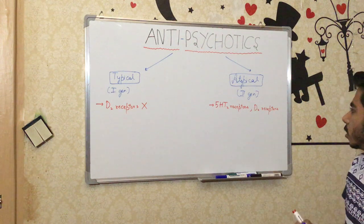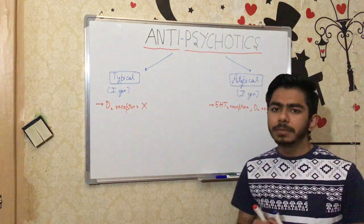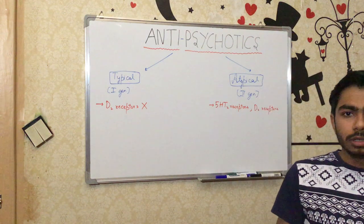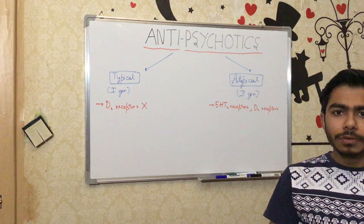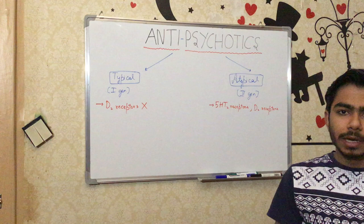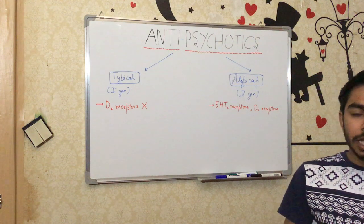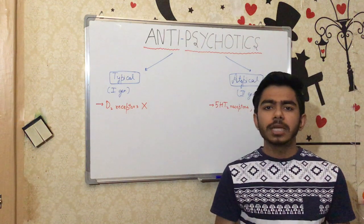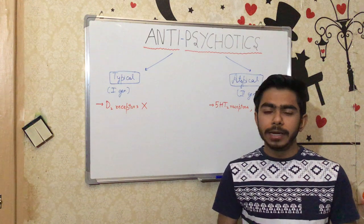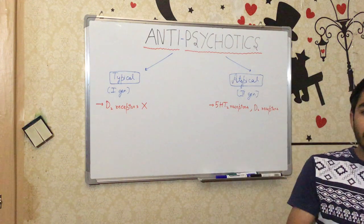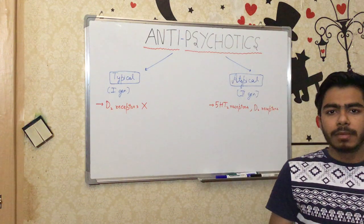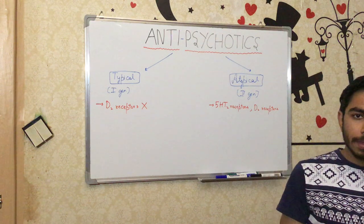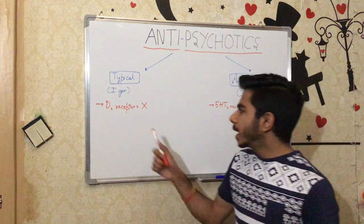Atypical antipsychotics basically bind to the serotonin 5-HT receptors. However, clozapine, which is one of the atypical drugs, can bind to D1, D2, D3, D4, and D5 — all dopamine receptors — as well as serotonin receptors, cholinergic receptors, alpha-adrenergic receptors, and histamine receptors too.